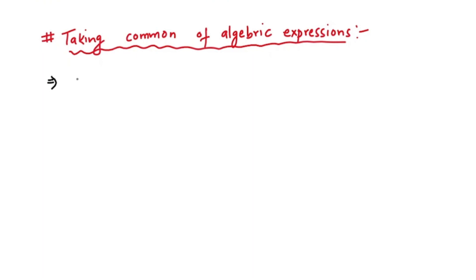Let's say we have an algebraic expression such as 2x plus 6. How do we take common in this case? We have to take common from the numbers 2 and 6. We have to find the highest common factor of 2 and 6 — the greatest common factor — which means the biggest number that can divide both 2 and 6.